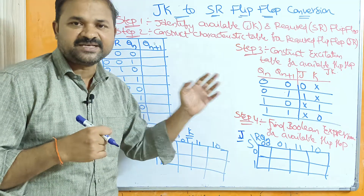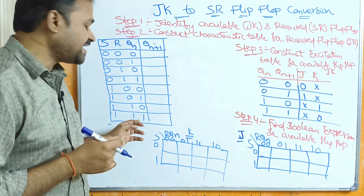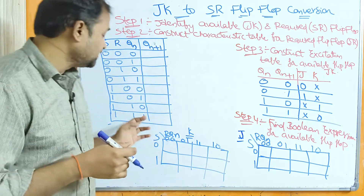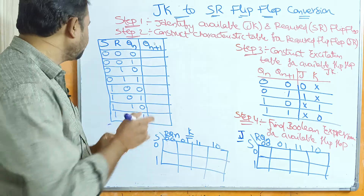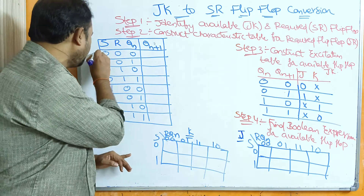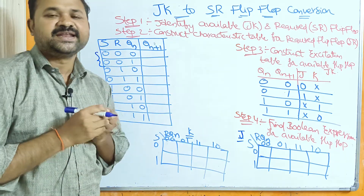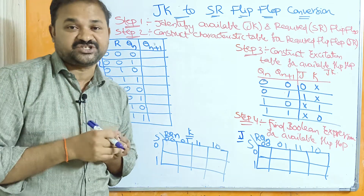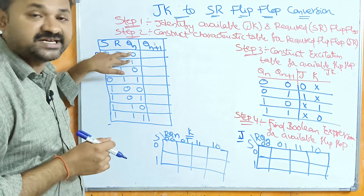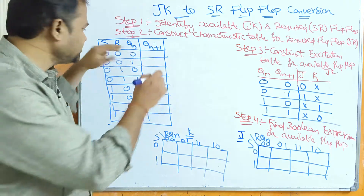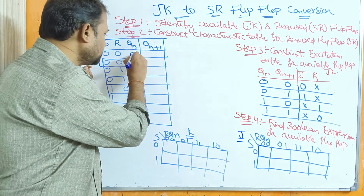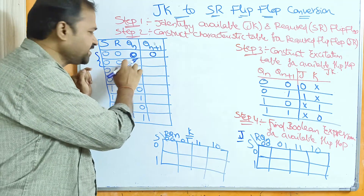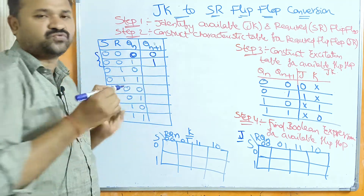The next combination is decimal number 1, binary number 0, 0, 1. Likewise, the last combination is decimal 7, binary 1, 1, 1. If you observe the first two combinations, S and R are both 0. In SR flip-flop, when S=0 and R=0, the output is no change. So when the current state Qn is 0, the next state will also be 0. When the current state is 1, the next state is also 1.